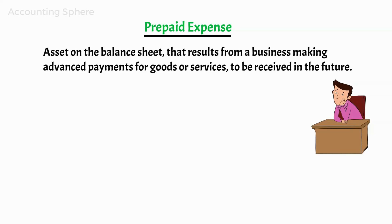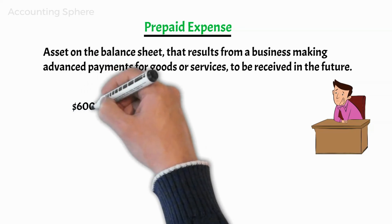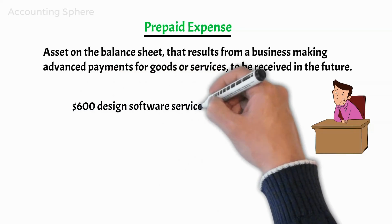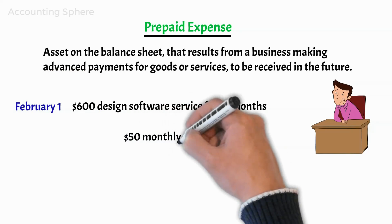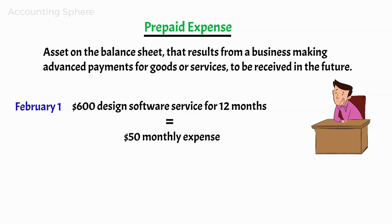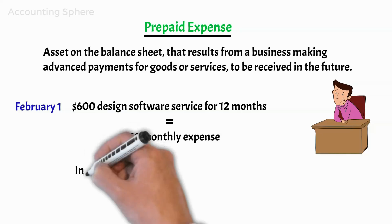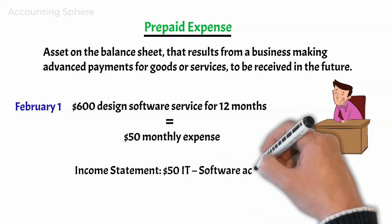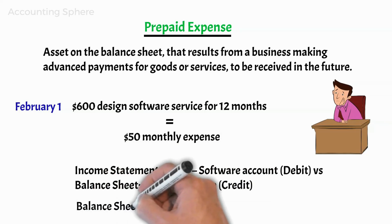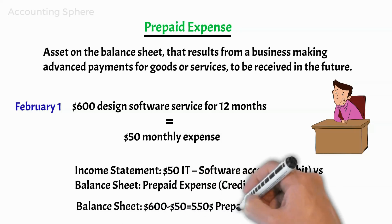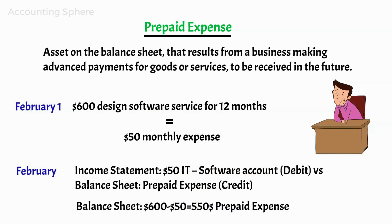Adding numbers to the situation: Fast Print has paid $600 for the usage of the design software service for 12 months starting on February 1st. This equals a monthly expense of $50 ($600 divided by 12). In February, Fast Print will use $50 and will charge it to the income statement under the IT software account. The remaining $550 will remain in the balance sheet assets section under the prepaid account.